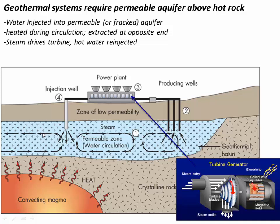The way these systems typically work is we inject water into this permeable material, and the water circulates, mostly driven by convection. As it does so, it heats up and absorbs the heat from the rocks. Then eventually we pump out either steam or very hot water, and we make steam which is put into a steam-driven turbine to spin our electromagnetic generator and make electricity.